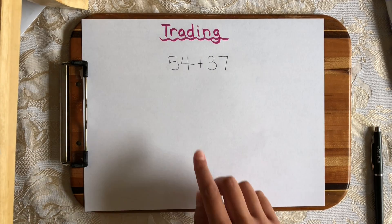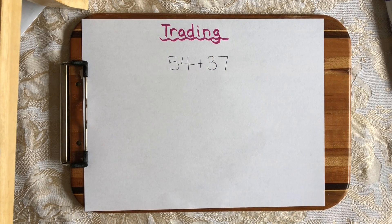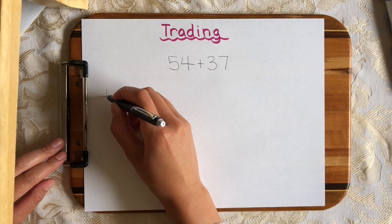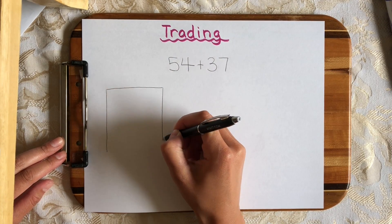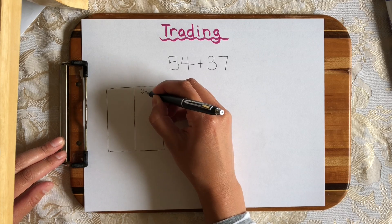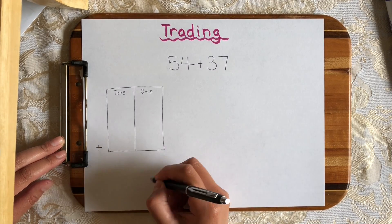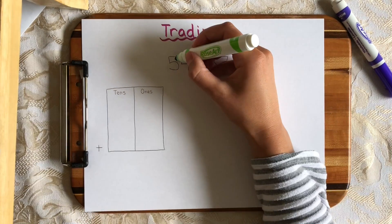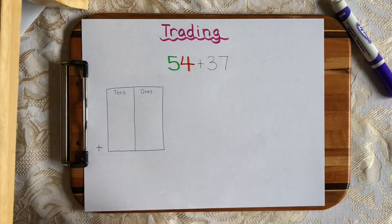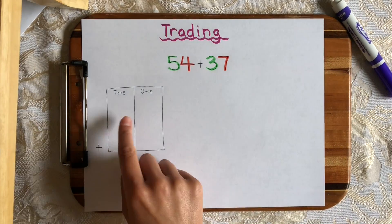This strategy is called the trading strategy. So let's go ahead and solve 54 plus 37 using this trading strategy. I'm actually going to show you the trading strategy with lines and dots first, and then I will show you what that looks like with numbers. So I'm going to set up a tens and ones house with a line down the middle to show that this side is going to be my ones and this side is going to be my tens. And here's my addition sign and my sum will go down here. So 54 has five tens and four ones. 37 has three tens and seven ones.